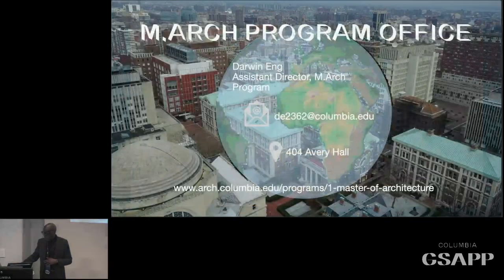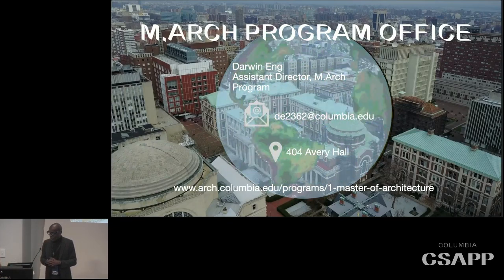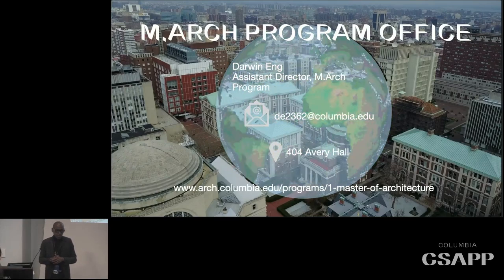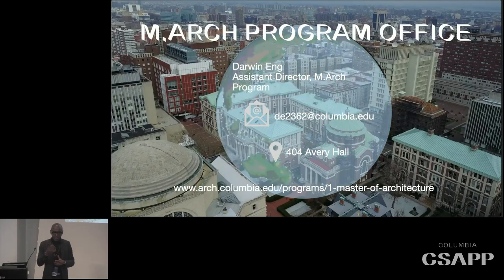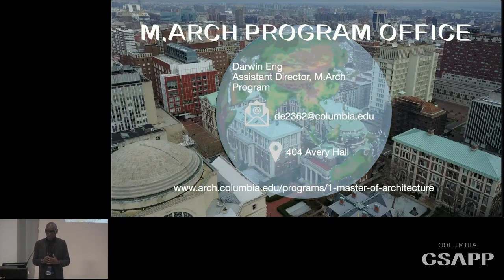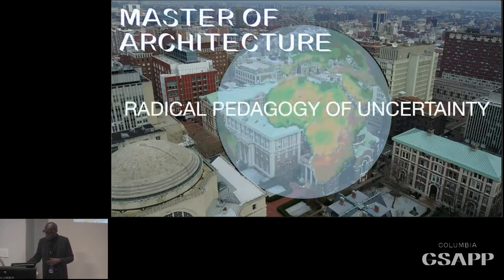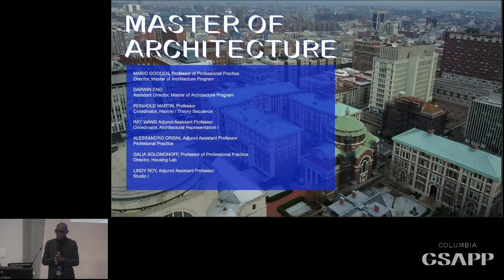This is Darwin Eng, the assistant director of the Master of Architecture program. Not only will some of you be in contact with the admissions office and Dean Stefan Boddiker, but if you have questions about requirements, you can also reach out to Darwin or myself. I'd now like to ask the faculty who are here — Professor Reinhold Martin, Ray Wang, Lindy Roy, and Alessandra Orsini — to join me, and we will open it up for any questions you may have.